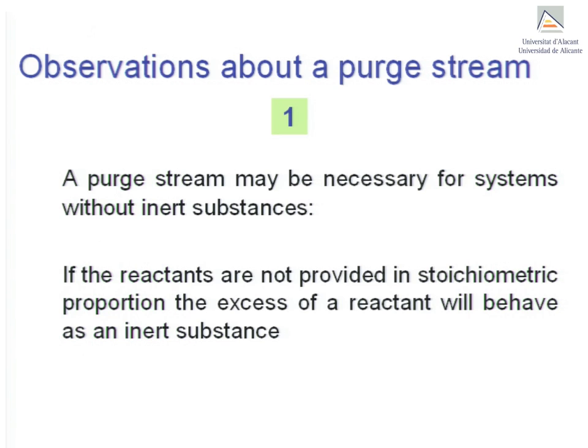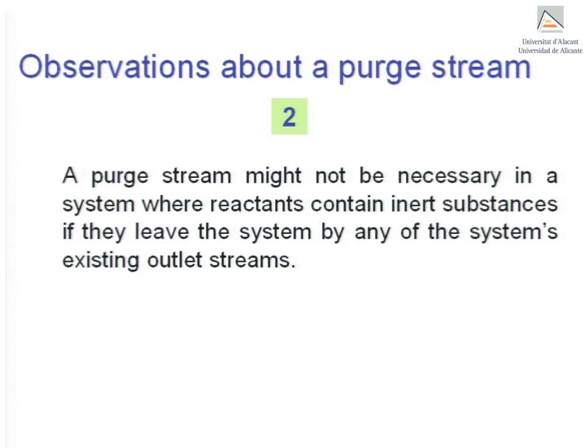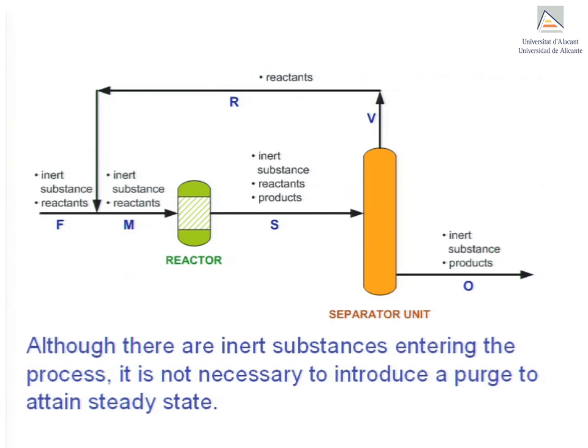If the excess reactant is not removed from the system, there will be too much of it in the system, making attainment of steady state impossible. Second observation: a purge stream might not be necessary in a system where reactants contain inert substances. This happens when the inert substance is able to leave by any of the system's existing outlet streams. For instance, if after the separation unit the inert substance is able to leave the process in stream O along with the product, then there is no need to force it out of the process by introducing a purge stream.